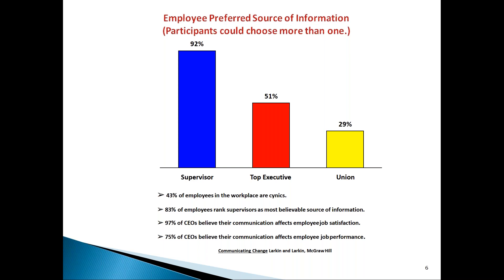The study I'm showing now really underpins everything I want to talk about: the importance of the supervisor and manager. When employees were asked their preferred source of information — given choices including group meetings, letters home, meetings with top executives, co-workers, and the grapevine — 92% chose their first-line supervisor as their most preferred source of information. That's compelling, especially when only 51% chose a top executive and only 29% would choose a union steward. Additionally, 43% of employees regard themselves as cynical, and 83% rank the supervisor as the most believable, most credible source of information.